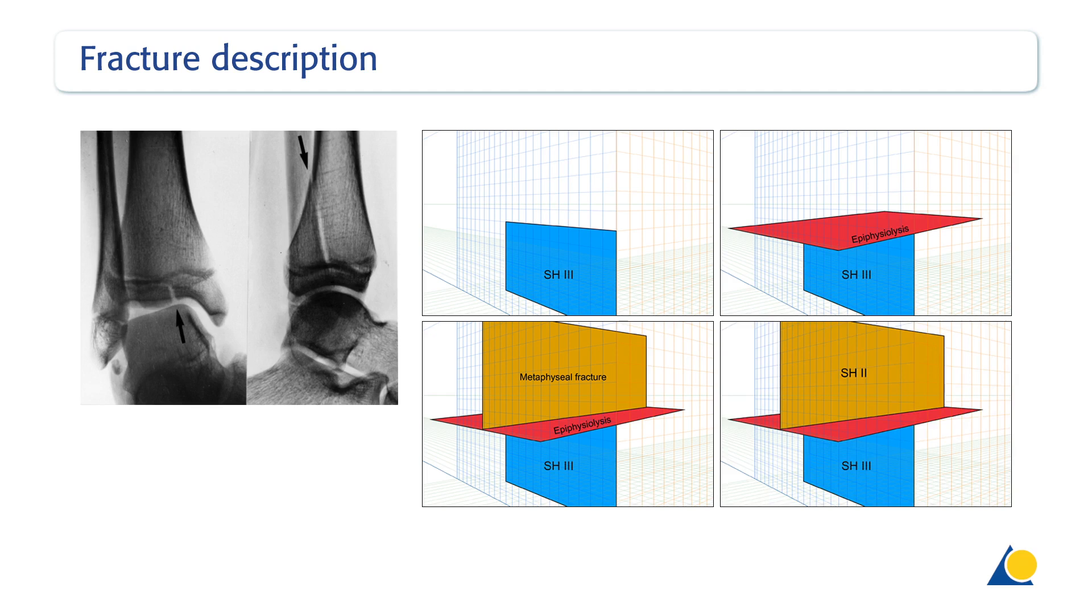In the transverse plane, it passes through the growth plate and in the coronal plane, it passes through the posterior metaphysis, for example, Salter-Harris type 2 fracture. Taken together, the fractures are, in principle, a Salter-Harris type 4 fracture.